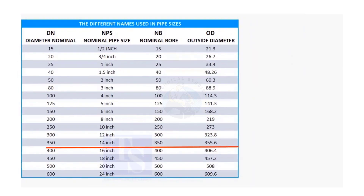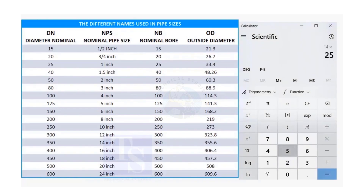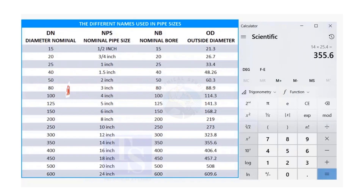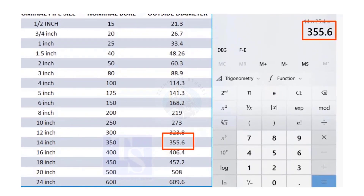Now check the OD of a 14 inch pipe. 14 multiplied by 25.4 is 355.6 millimeters. Calculate the diameter of bigger pipes and compare the answer with the original size.